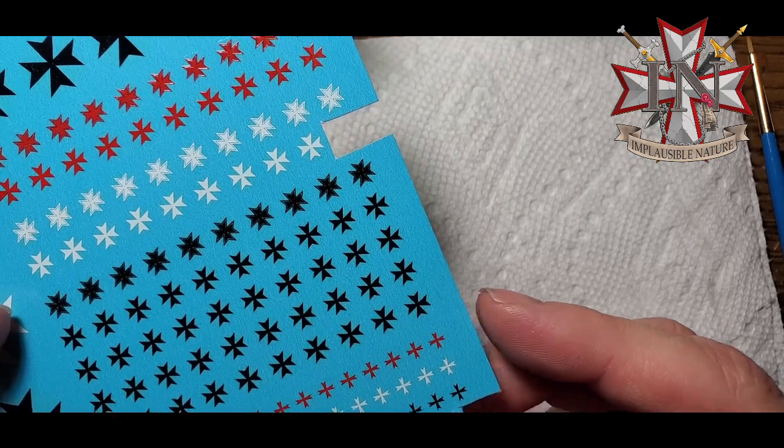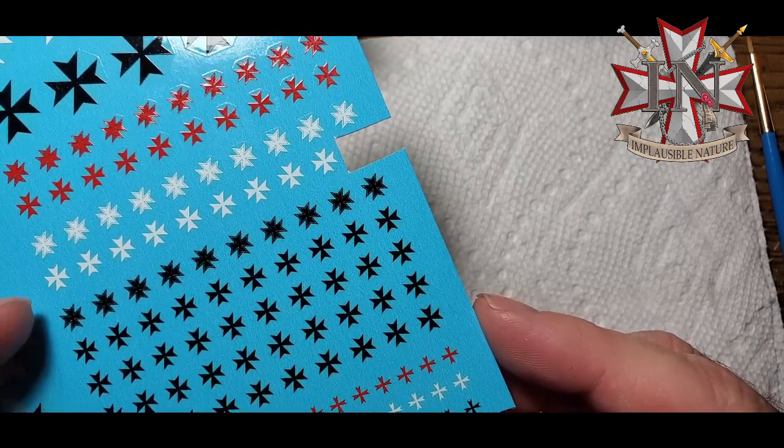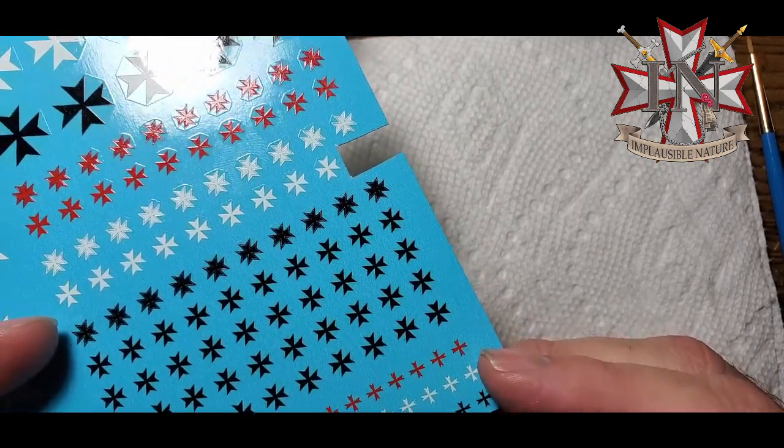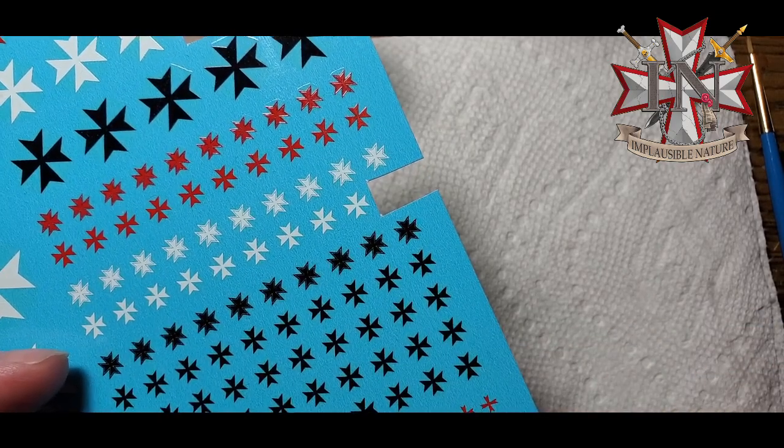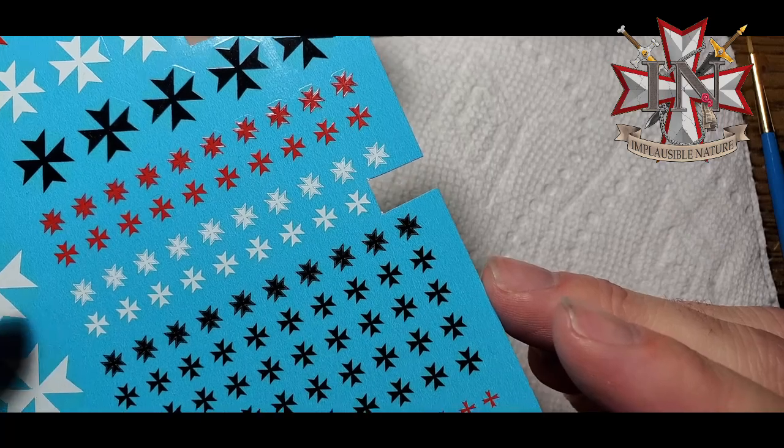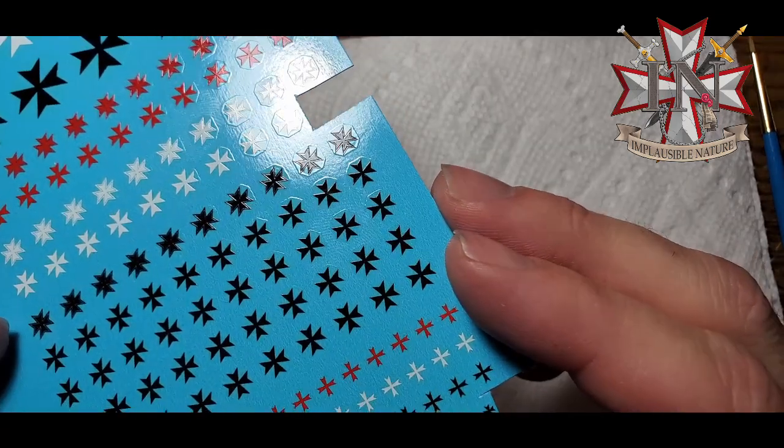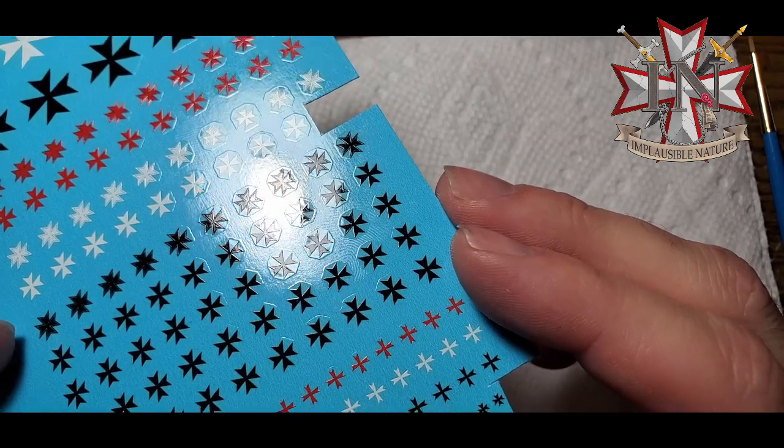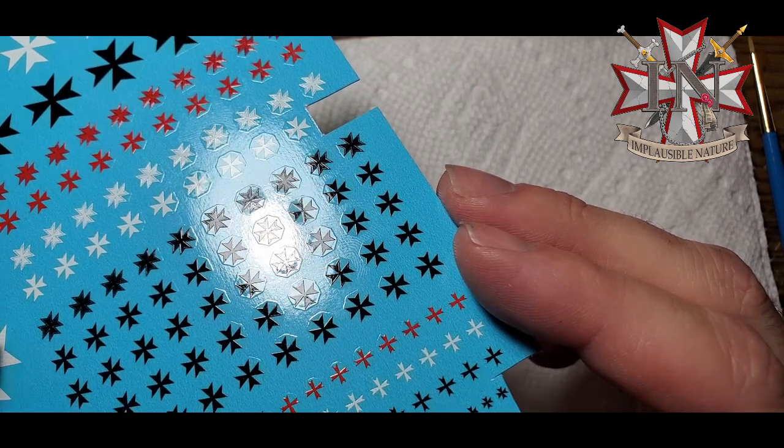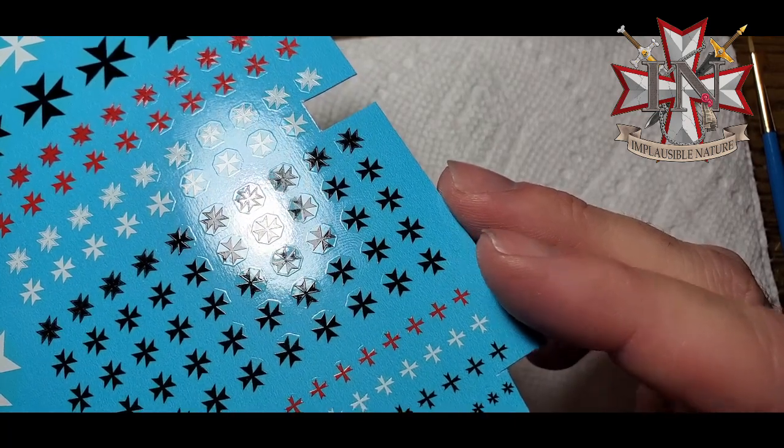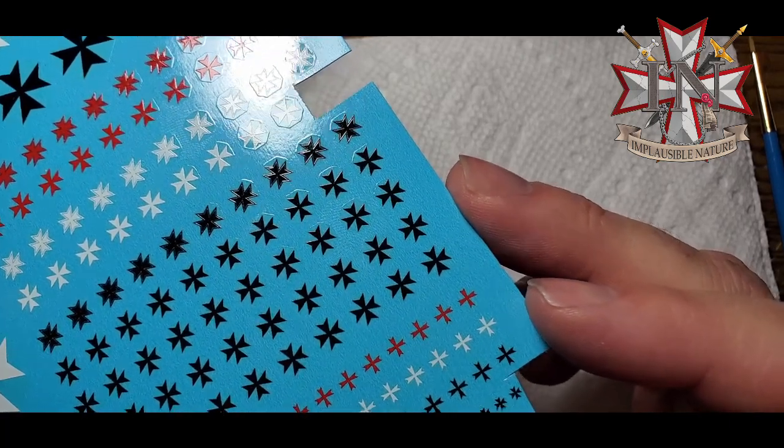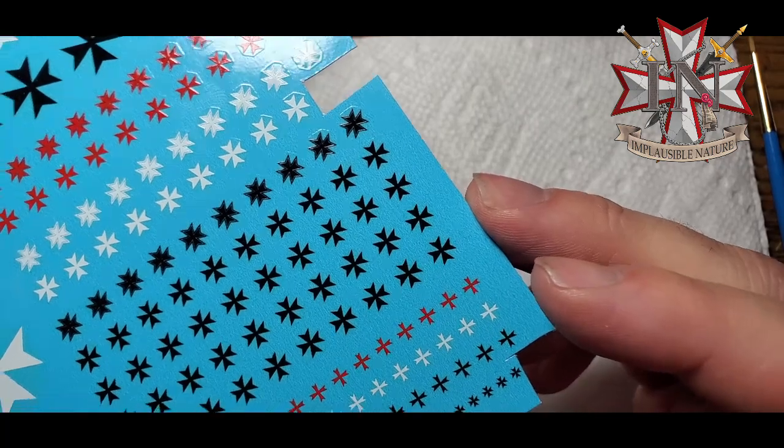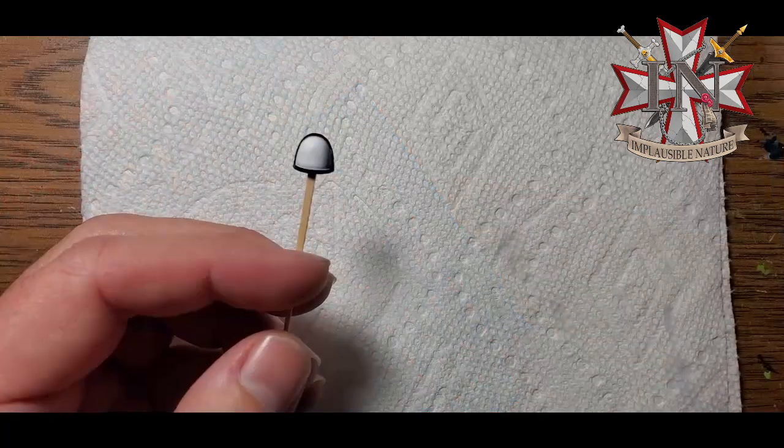Something to note. When you're using decals, you want to have that gloss varnish on there because, as you can see here, there is a clear carrier film, that's what it's called, around the actual image. And you want that to disappear. And the gloss varnish, along with a matte, a flat dull coat afterwards, will do that for you.